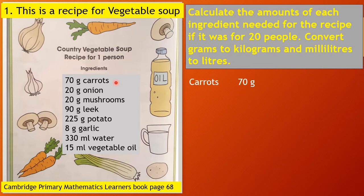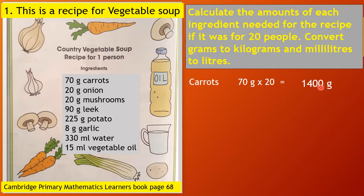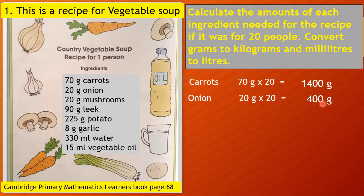Therefore, carrots — 70 grams multiplied by 20 — is equal to 1,400 grams. Applying your knowledge of multiplying by multiples of 10: multiply the non-zero digits, which is 7 and 2. 7 times 2 is 14, then add two zeros, giving 1,400 grams. Onion: 20 times 20 is equal to 400 grams. 2 times 2 is 4, add two zeros, so it's 400 grams. Next is mushroom, 20 times 20 — again, the answer is 400 grams.